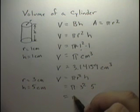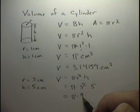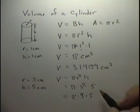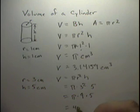And we know pi times 9 times 5. And 9 times 5 is 45, so 45 times pi.